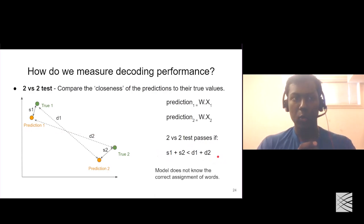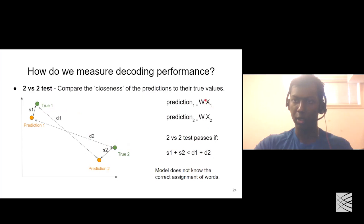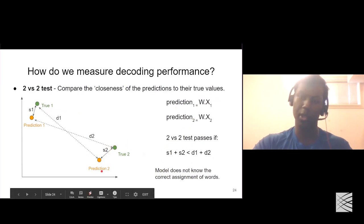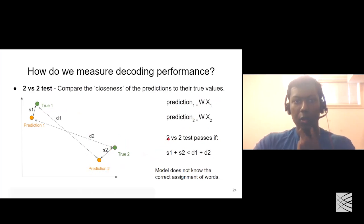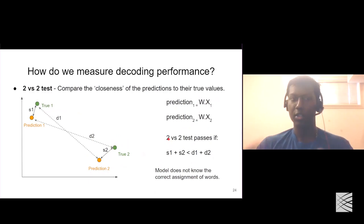The model does not know the true values — it only has the input data. The prediction is made only based on the input data and the transformation matrix learned during training. One important characteristic of the two-versus-two test is that the chance accuracy is 50%: if there is no relation between the brain imaging data and the word vectors, you will get an accuracy of 50%.